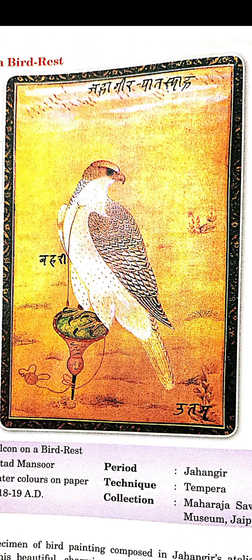Safed, alge bhoore, brown, aur gahre neele aur kale rang ka upyog bird ko banane ke liye kiya gaya hai. Bird rest par jo gaddi hai woh hare rang ki banayi gayi hai, aur isthan isthan par kuch lipikaari bhi ki gayi hai. Aur yeh jo lipikaari hai — upar 'Jahangir pasand', beech mein 'Behri', aur ant mein 'Uttam' — aisa isme likha hua hai.